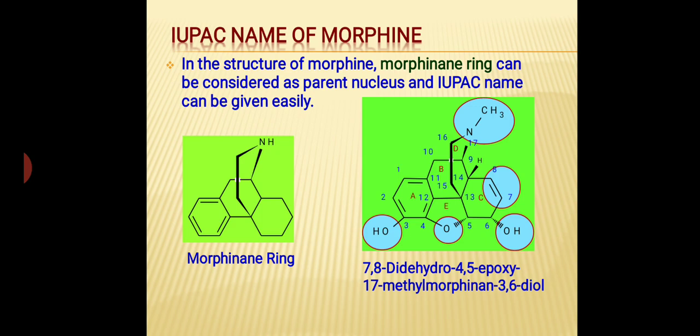So the final IUPAC name of morphine is: 7,8-didehydro-4,5-epoxy-17-methyl-morphine-3,6-diol.